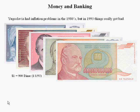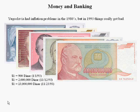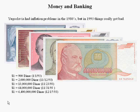In January 1993, one dollar could buy you 900 dinar. That same dollar bought you 2 million dinar in November 1993. A couple weeks later, that same dollar bought you 13 million dinar. A couple weeks after that, 64 million dinar. A couple weeks after that, 6.4 billion dinar. Prices were doubling every day.